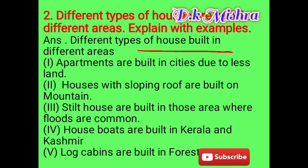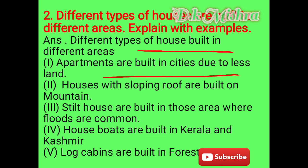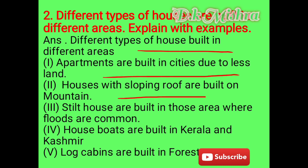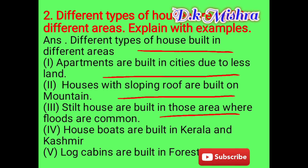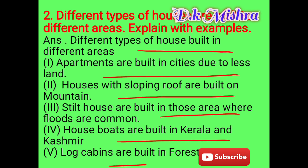Question two: Different types of houses are built in different areas — explain with examples. Apartments are built in cities due to less land. Homes with sloping roofs are built on mountains. Stilt houses are built in areas where floods are common. Houseboats are built in Kerala and Kashmir. Log cabins are built in forests.